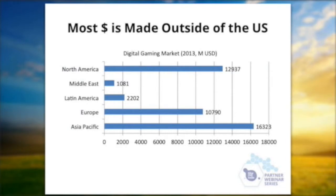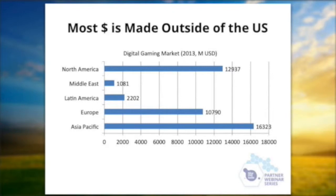Most of the money made in apps is made outside of the U.S. People around the Bay Area are fairly Bay Area-centric — I can say that because I live there. But most of the money you see on this chart is actually made in Europe, Asia Pacific, and even in emerging markets like the Middle East and Latin America, it's growing very quickly. That's going to accelerate as you see the proportion of low-end smartphones take over from feature phones — that transition is happening very rapidly. We're talking about billions, tens of billions of dollar market that you can attack outside of the U.S.